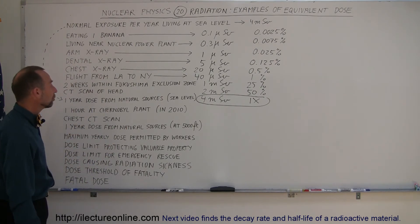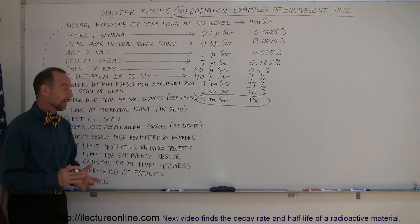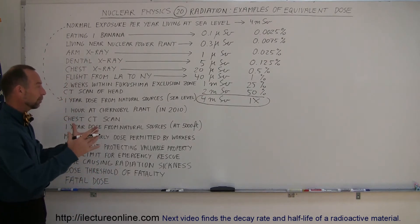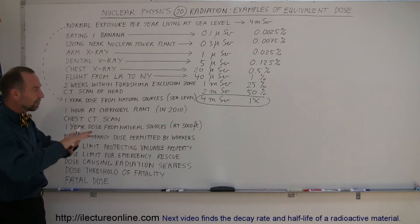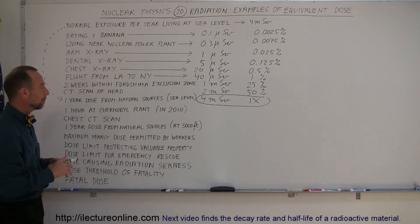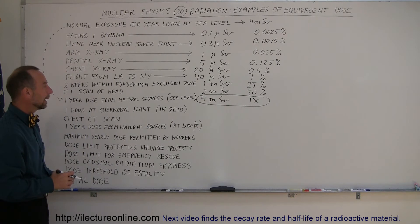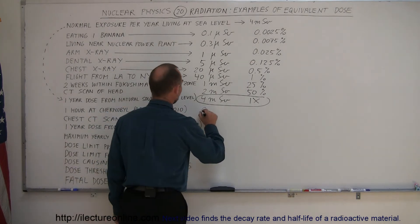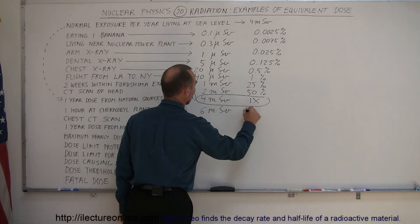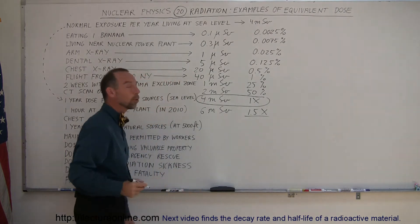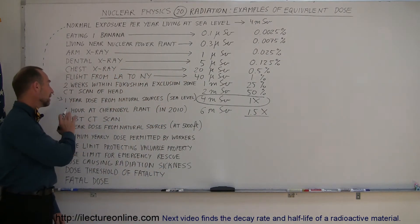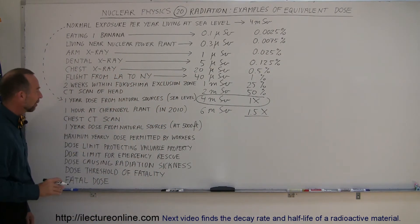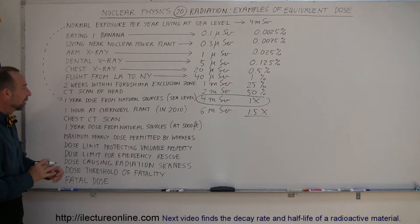One hour at Chernobyl plant in 2010. Chernobyl, we had a big nuclear disaster. The power plant blew up. They were able to put out the fire and tomb the plant in a big concrete tomb. The exposure level now when you go and visit one hour at that plant site is about 6 millisieverts, which is about 1.5 times what we normally receive in a whole year. Not a good idea to spend your vacation at the nuclear power plant in Chernobyl.